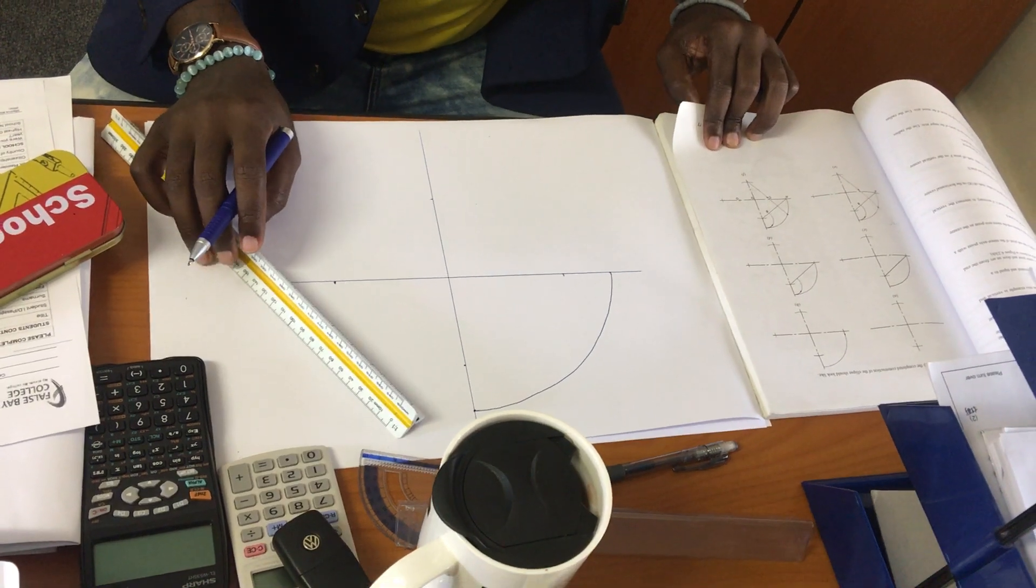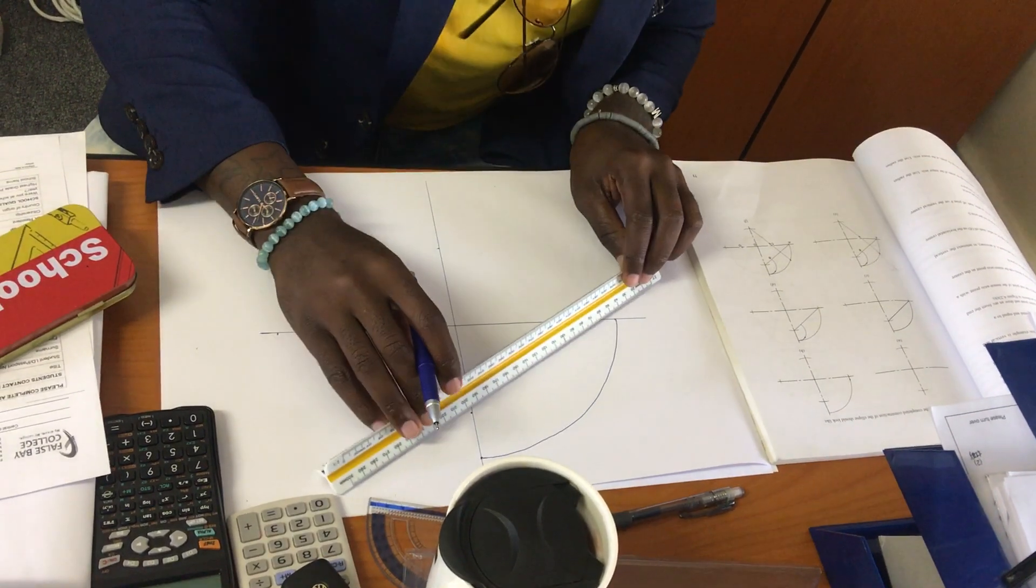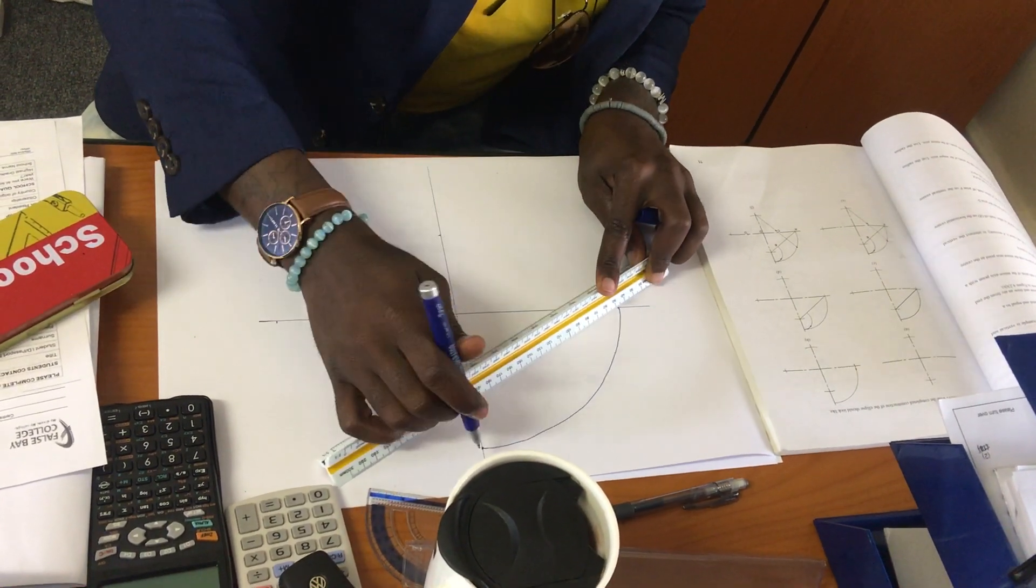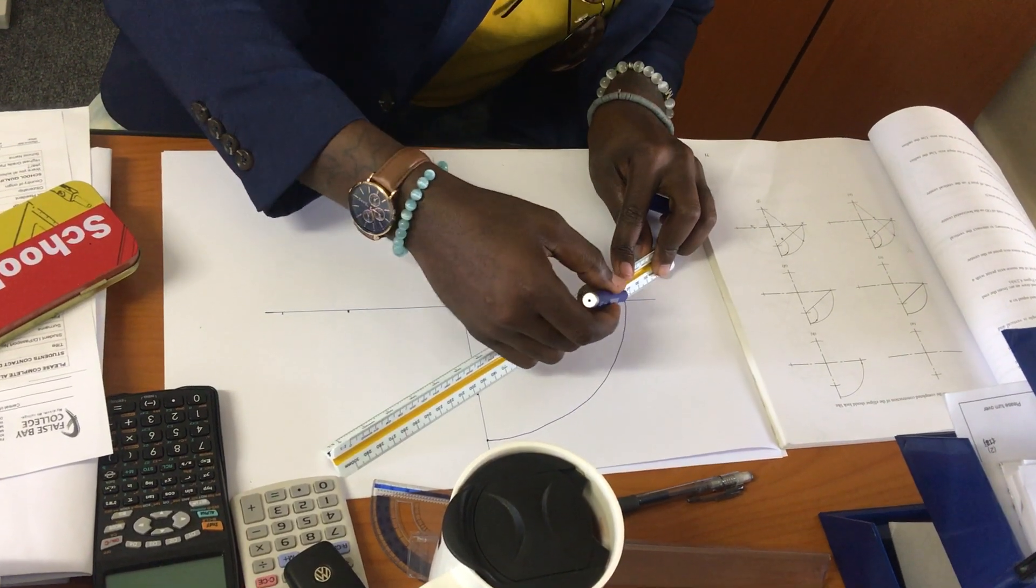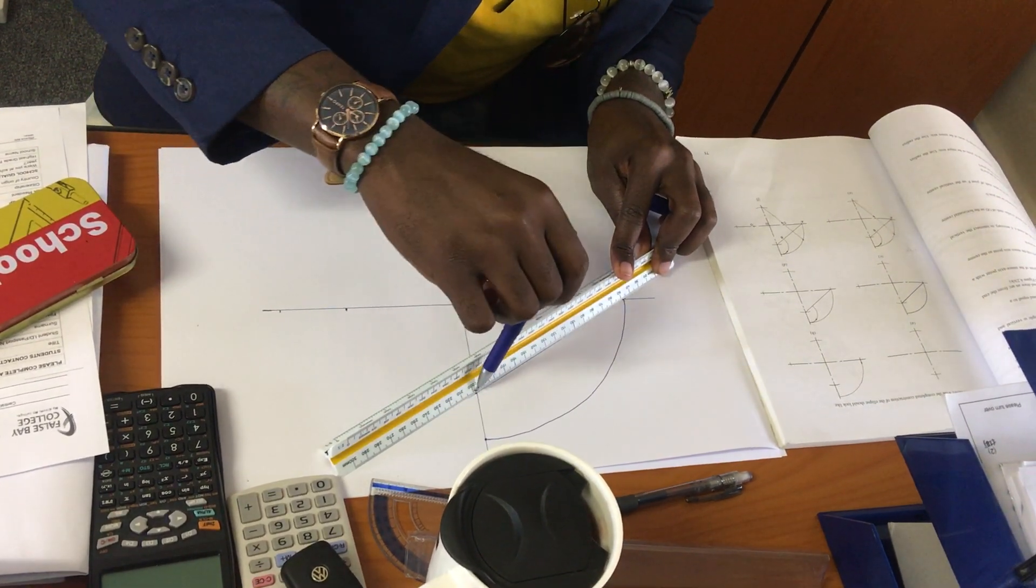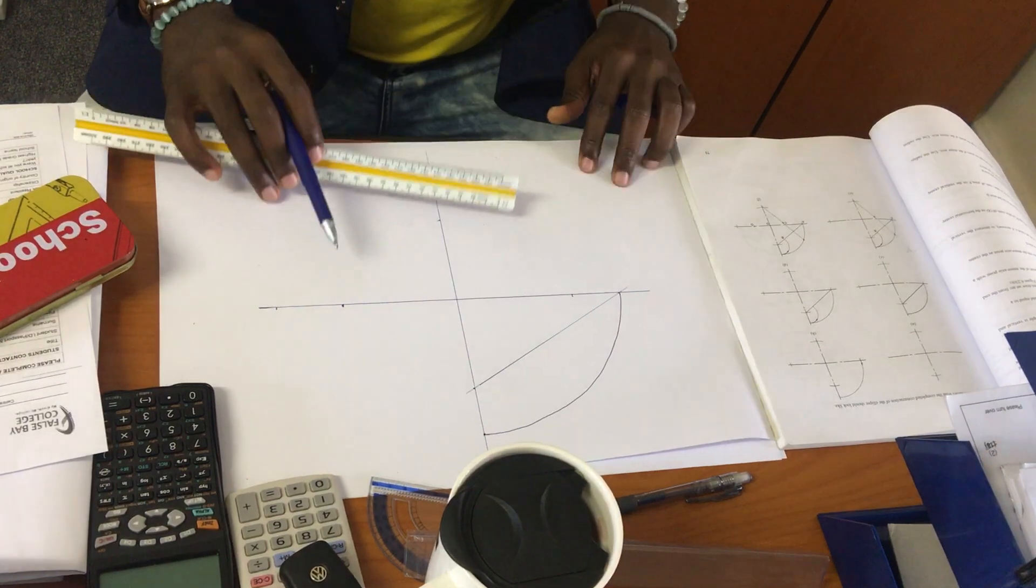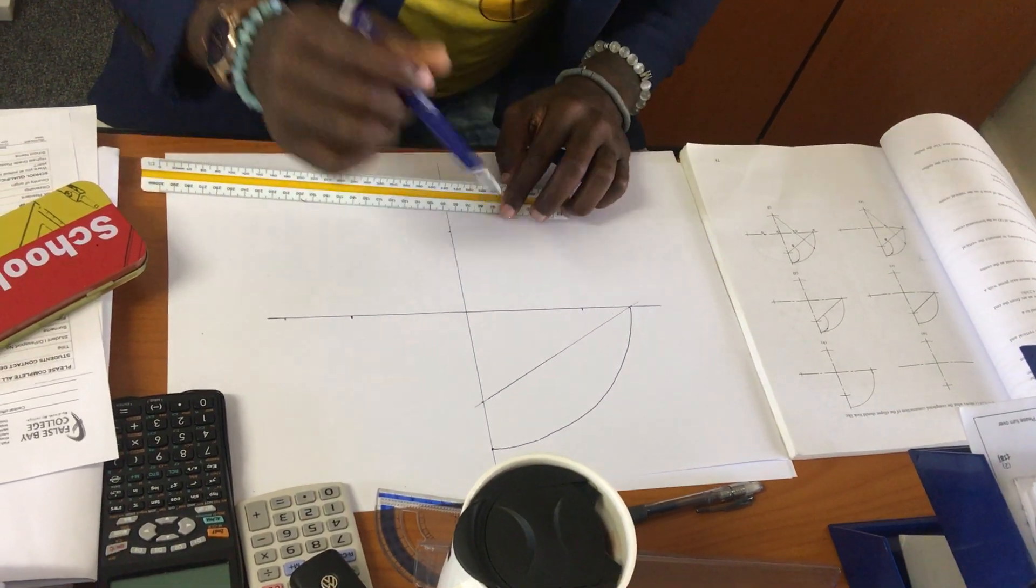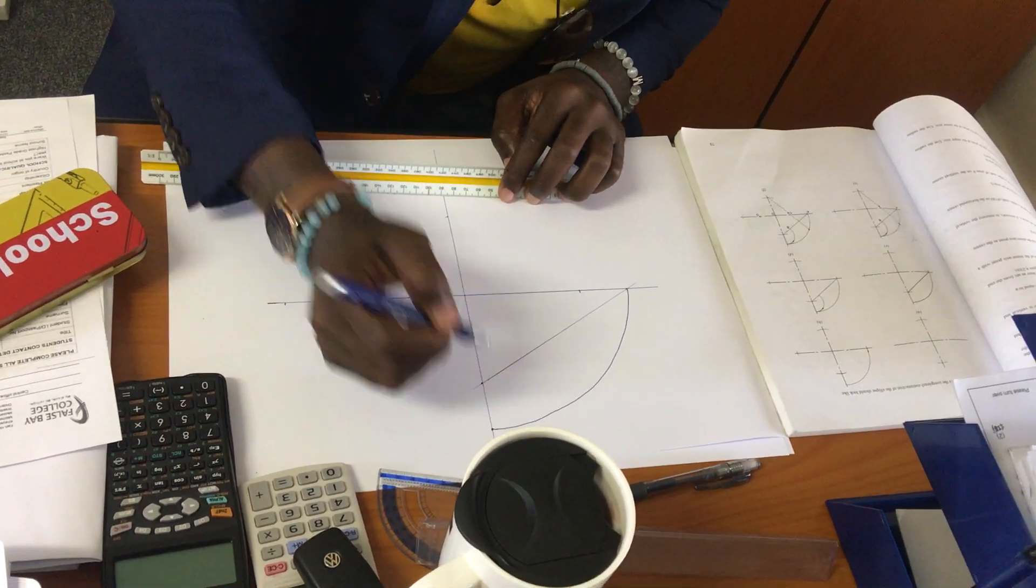After that, the next step is you connect this line with this point with a very faint construction line. Then you're going to take your compass and pinpoint it right at the top of this dimension here.